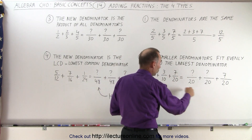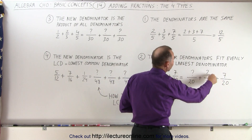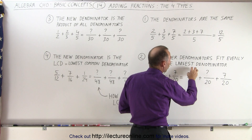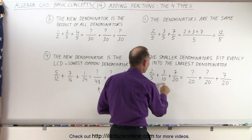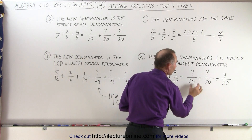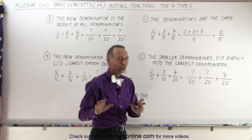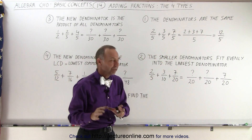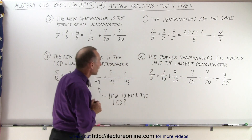Notice the 7 over 20 doesn't change, but now you'll have to figure out what the new numerators will be for the other two fractions, now that you've changed the denominator to 20. We'll show you later in another video how to do that.